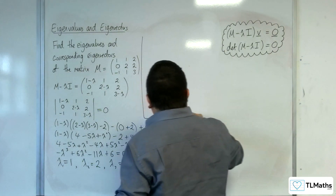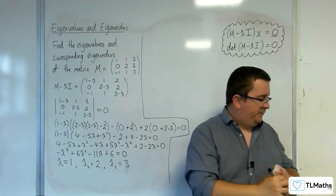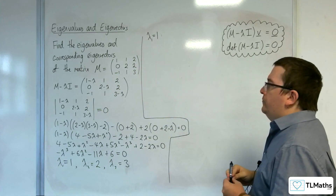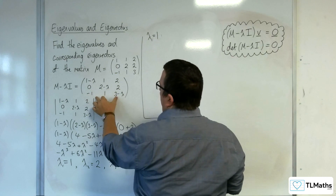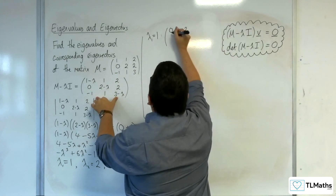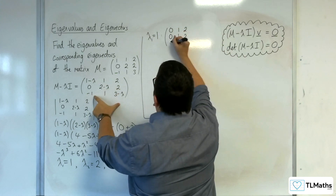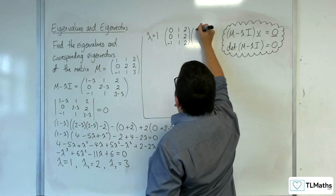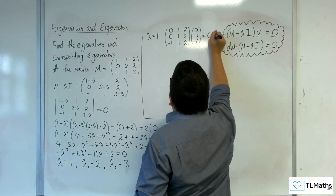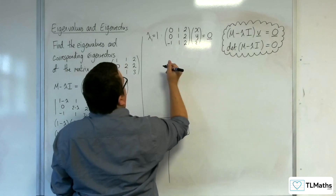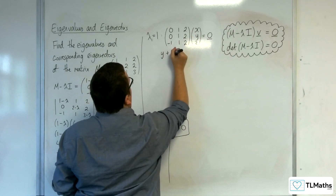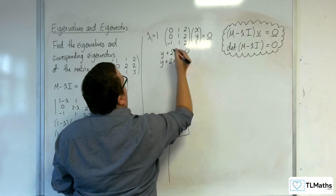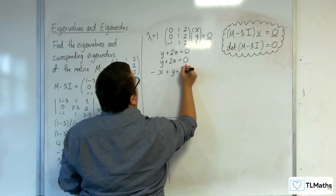Next, we work out the corresponding eigenvectors. For eigenvalue λ=1, substituting into (M - λI) gives the matrix: 0, 1, 2; 0, 1, 2; -1, 1, 2. Multiplying with eigenvector (x, y, z) to get the zero vector gives: y + 2z = 0; y + 2z = 0; and -x + y + 2z = 0.